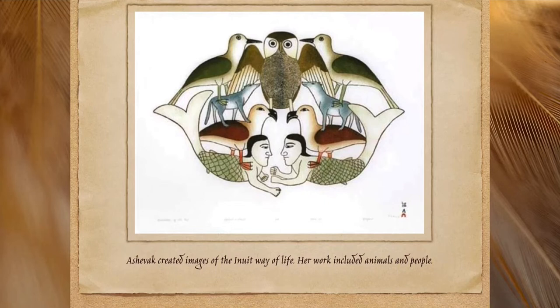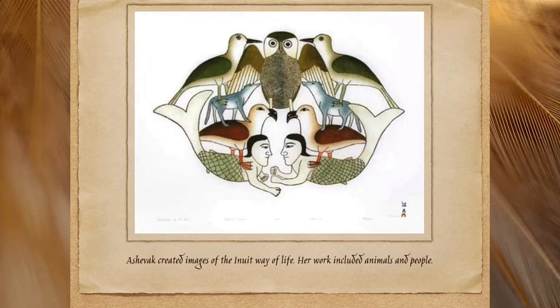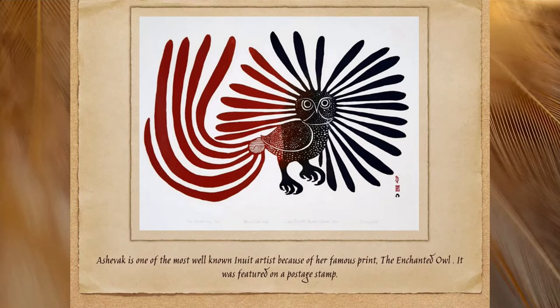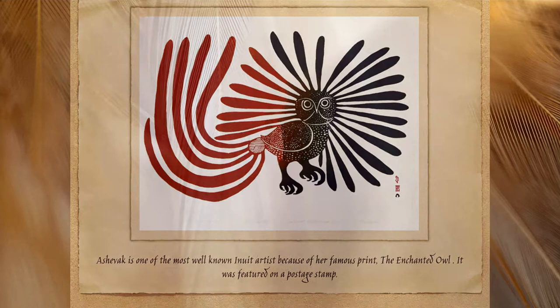Ashavak created images of the Inuit way of life. Her work included animals and people. Ashavak is one of the most well-known Inuit artists because of her famous print, The Enchanted Owl. It was featured on a postage stamp.